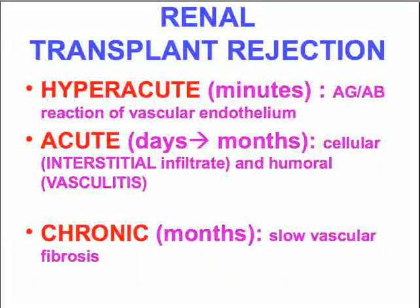In acute rejection, now we're talking about perhaps days to months. We can see the body attacking the graft by infiltrating it with cells. One pattern would be an interstitial infiltrate. Another is more of an antibody phenomenon in which the allograft develops a vasculitis due to the presence of antibodies attacking the endothelium of the graft.